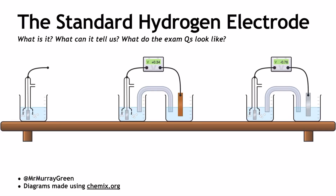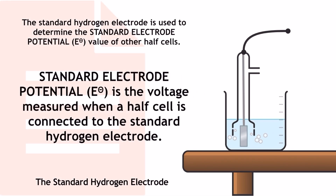The standard hydrogen electrode is used to determine the standard electrode potential of a half cell. By definition, standard electrode potential is the voltage measured, or EMF, when a half cell is connected to the standard hydrogen electrode. The standard hydrogen electrode is occasionally also called the standard hydrogen half cell — they're exactly the same thing.